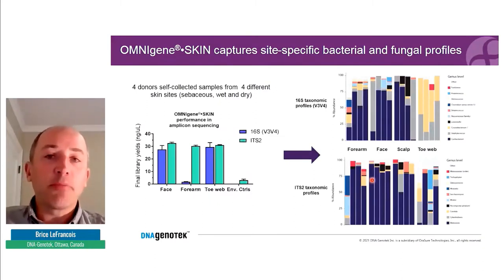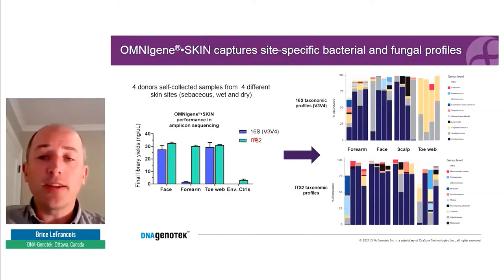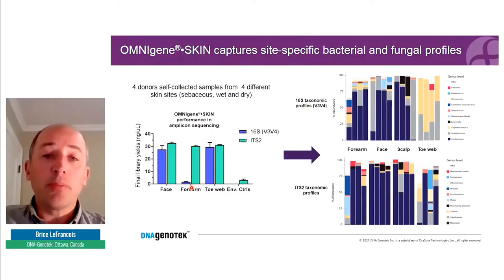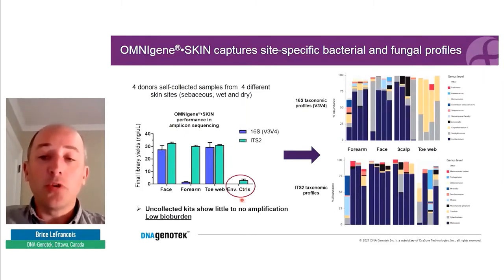We then wanted to ensure that OmniGene Skin can capture site-specific bacterial and fungal profiles. Four donors collected from four different sites — sebaceous, wet, and dry. DNA was extracted with our optimized workflow and amplicon sequencing was performed: 16S using V3/V4 primers and ITS2. We saw robust amplification for both 16S and ITS2 for face and toe web samples, with less amplification for 16S in forearm samples — expected given the very low bacterial load at that site. Environmental controls showed very little to no amplification, again indicating low bioburden.